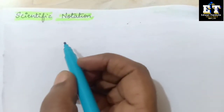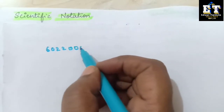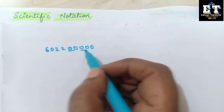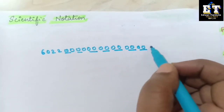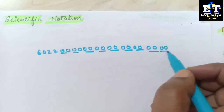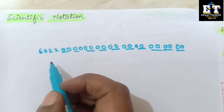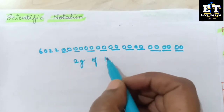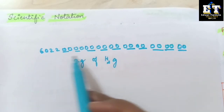In chemistry, if you consider a matter, it is made up of a large number of particles like atoms or molecules, and its masses are also very, very big. For example, 6.022 followed by 23 digits — that many number of molecules will be present in 2 grams of hydrogen gas. So this many molecules are present in 2 grams of hydrogen gas — such a huge number.